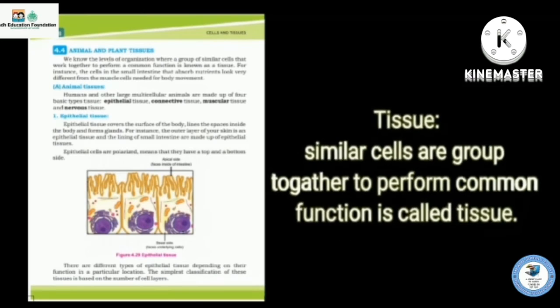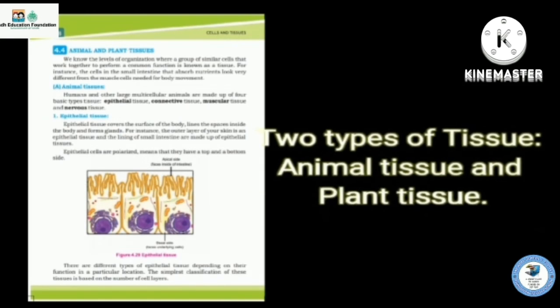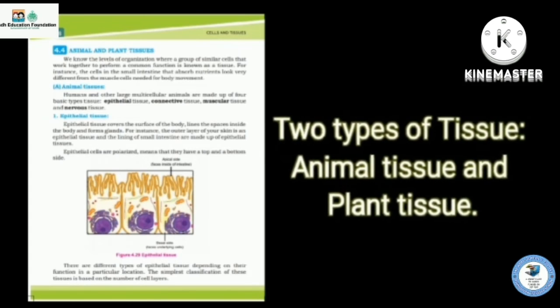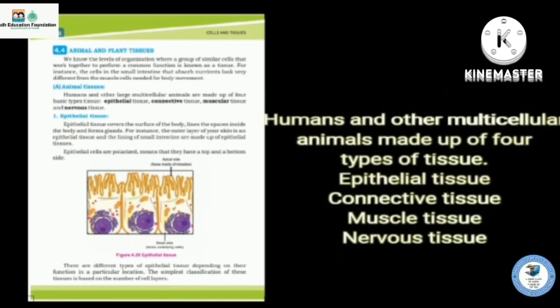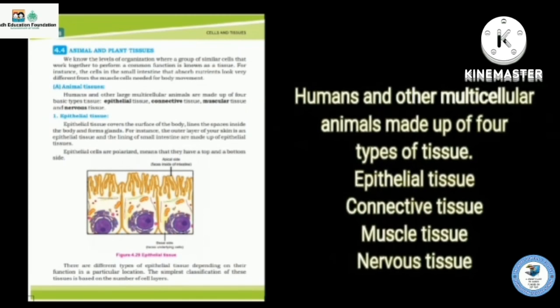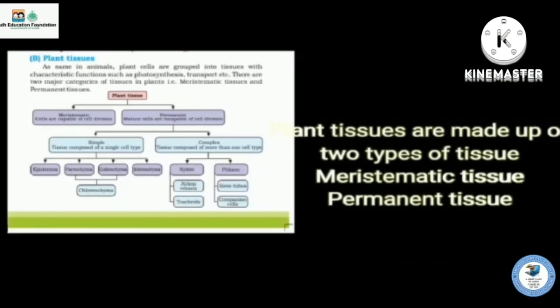Tissue: similar cells are grouped together to perform common function is called tissue. There are two types of tissue, animal tissue and plant tissue. Human and other multicellular animals are made up of four types of tissue: epithelial tissue, connective tissue, muscle tissue and nervous tissue.